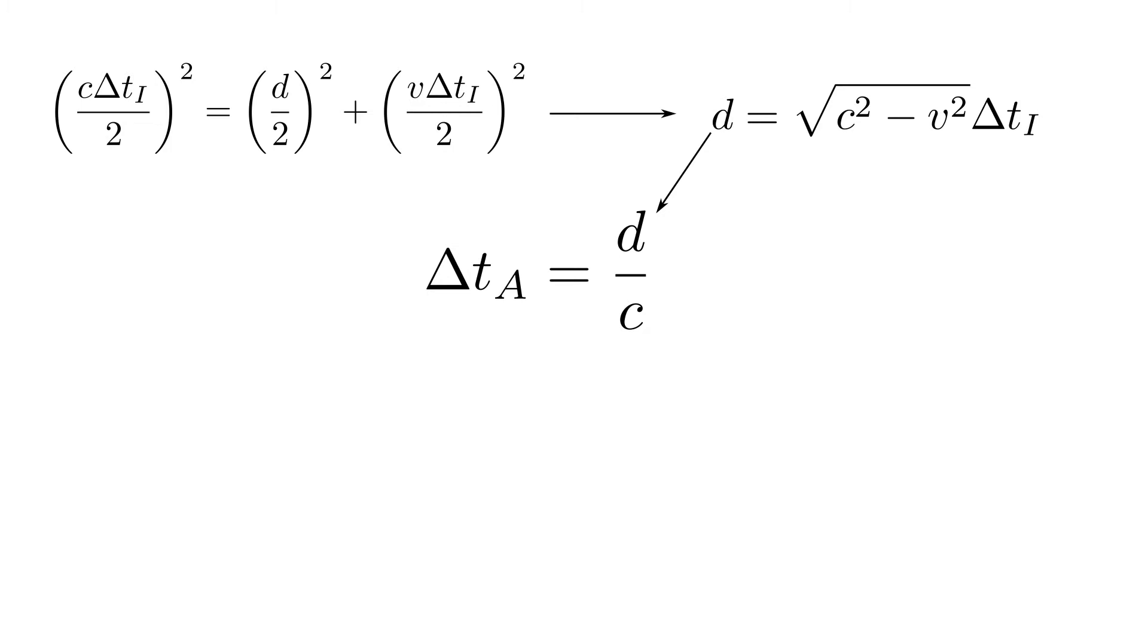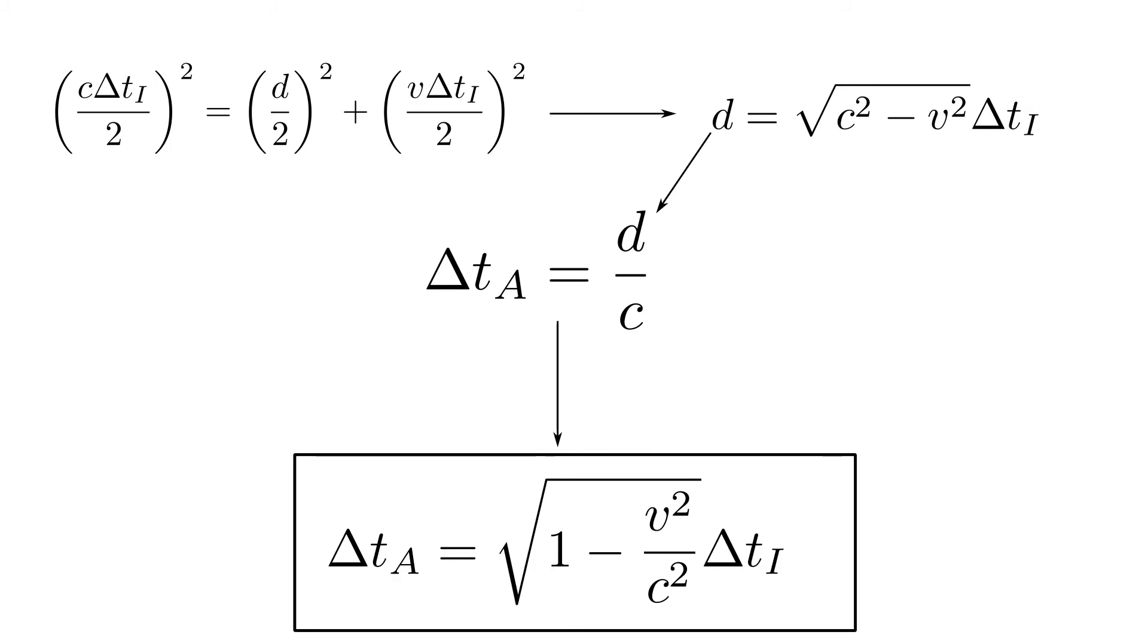we can substitute it into the equation for the time measured by Albert, which gives delta t a is equal to the square root of 1 minus v squared over c squared delta t i.